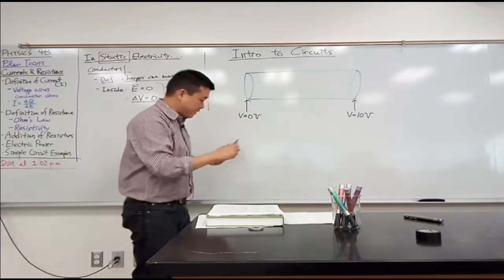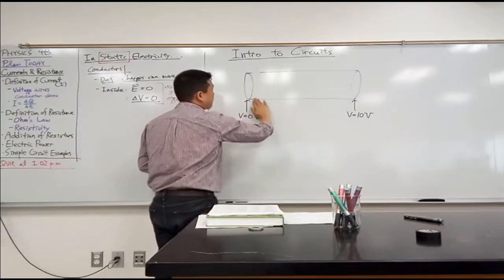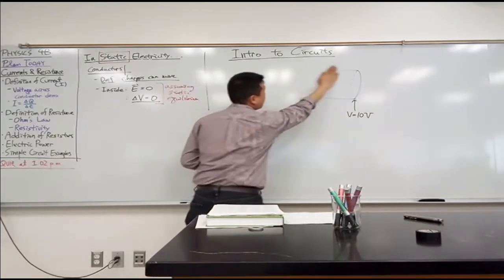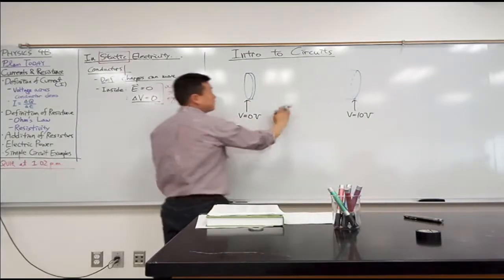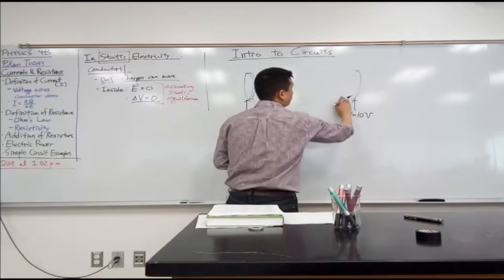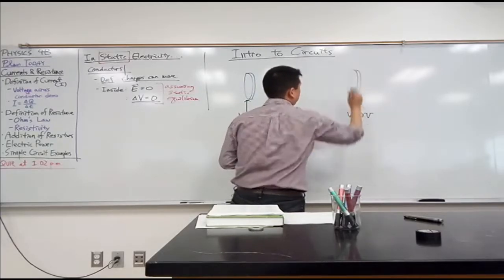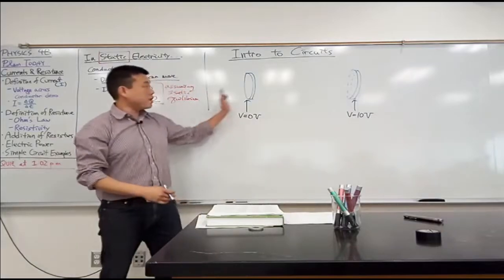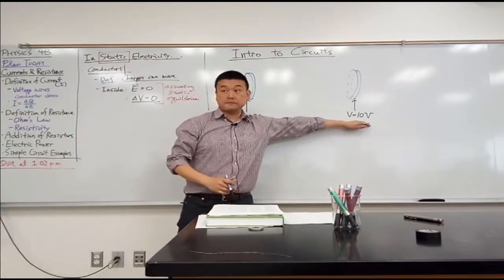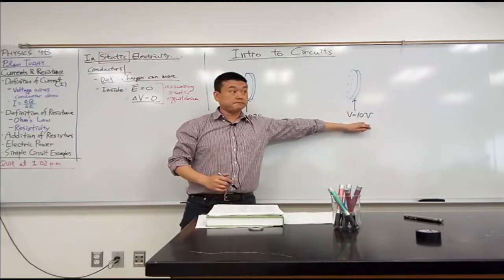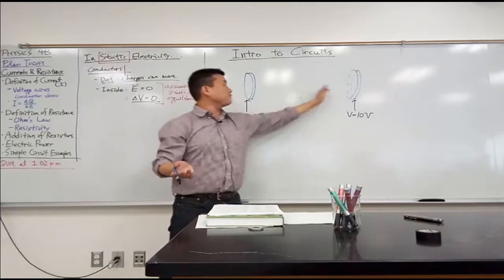Imagine that instead of this being a conductor, imagine this was like the capacitor setup where I have a plate on the left charged to zero volts and a plate on the right charged to 10 volts. If there wasn't a conducting path, what would putting this voltage difference mean?